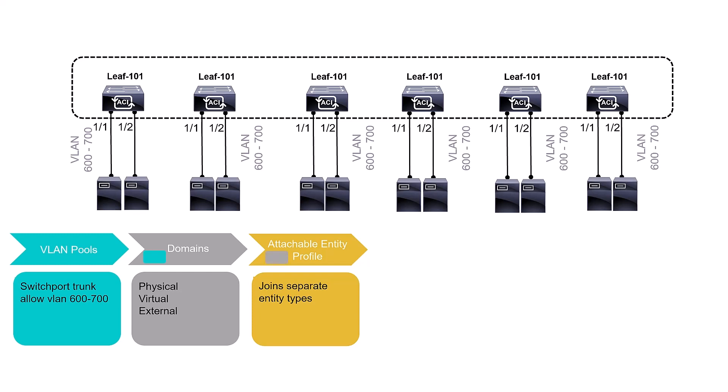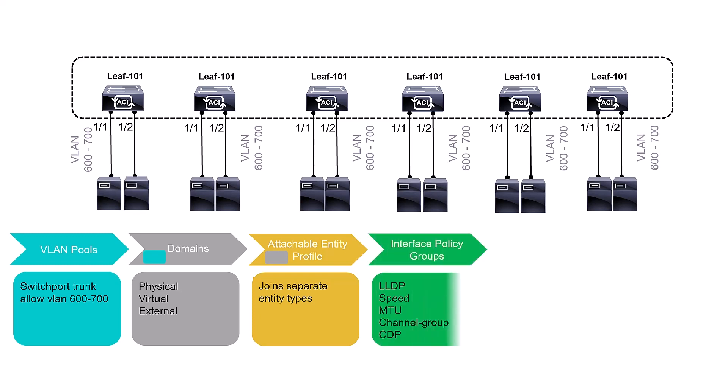Step four: configure Interface Policy Groups. These include all the protocols that need to be activated on interfaces connected to servers — such as LLDP, speed, duplex, MTU, port-channel, CDP, or whatever protocols you wish to activate. Group them into an interface policy group. Even if it's a single protocol, it must be in an interface policy group — and nest the previous steps into it.